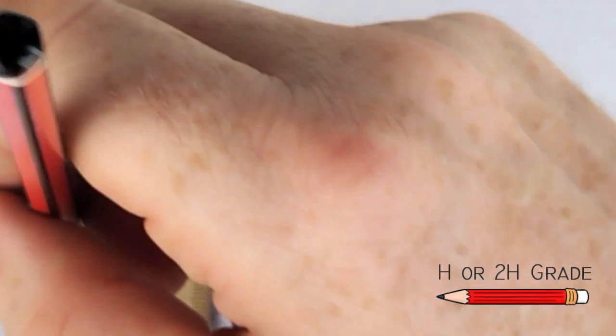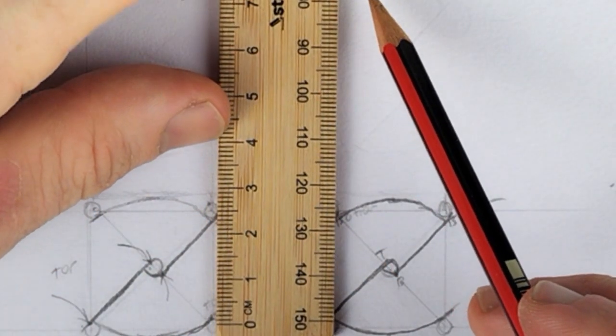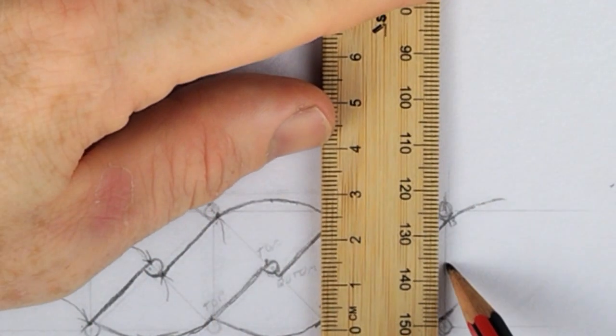Using the vertical grid lines set up from the previous drawing, project new vertical lines above the previous drawing using a ruler and an H or 2H pencil.